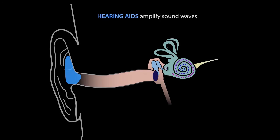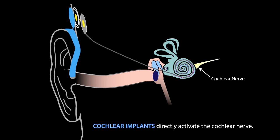And finally, if you have hearing problems, a hearing aid can be used to amplify sound waves. And if you have a damaged eardrum, bones, or cochlea, a cochlear implant can be used to send electric signals directly to the cochlear nerve.